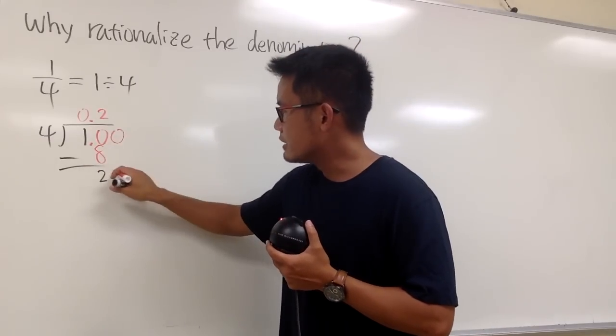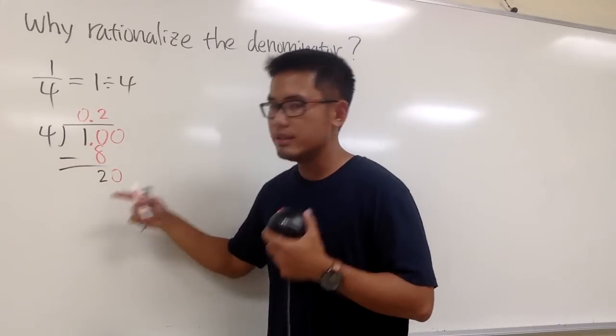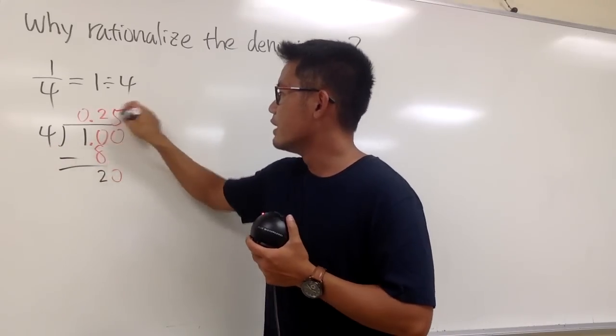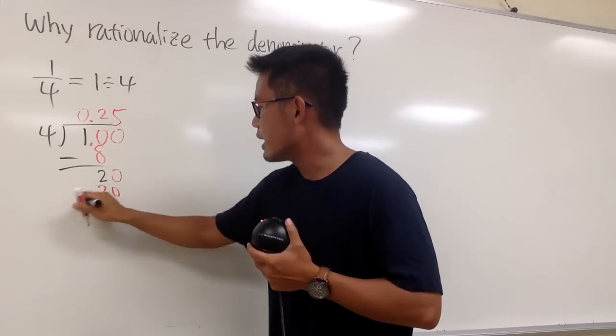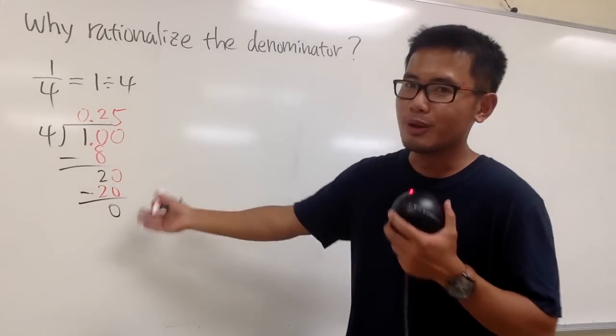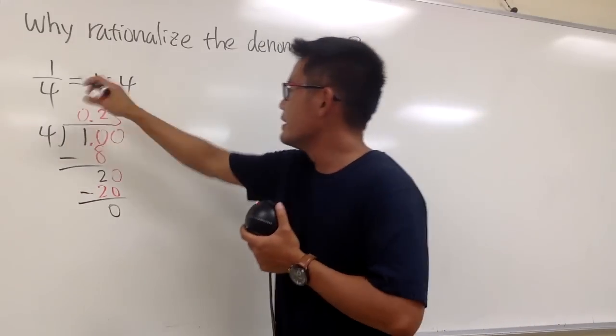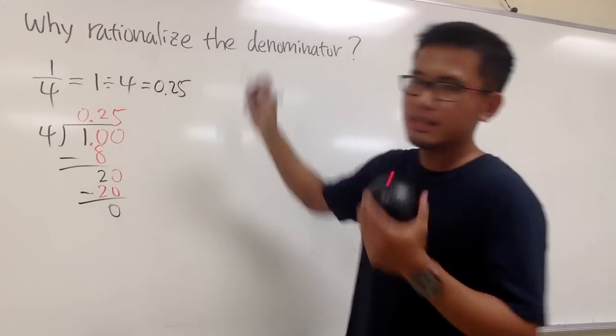Put on 0, drop this down, and 4 goes into 20 how many times? Well, 5 times. 5 times 4 is 20, and you subtract. You are done because there's no more left. So you know this is 0.25, and that's it.